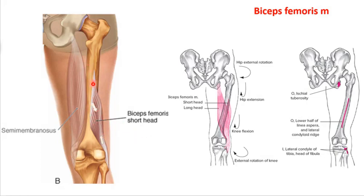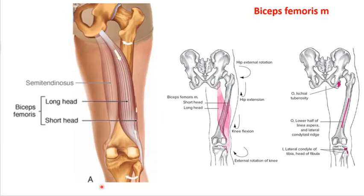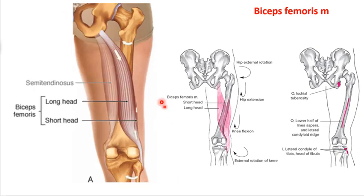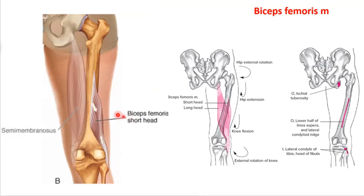The relationship between the long head and short head of the biceps femoris is similar to the iliopsoas — different originations but the same insertion. They become one muscle and one tendon inserting onto the head of the fibula. The long head originates at the ischial tuberosity, and the short head originates down the length of the lower half of the femur.